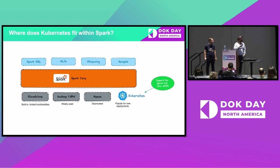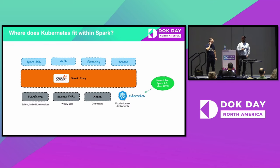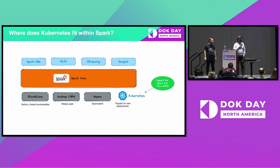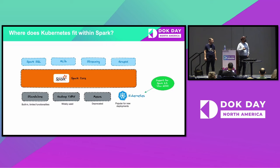Let's get started on Spark on Kubernetes. Apache Spark is a distributed processing framework mainly used for processing terabytes and even petabytes of data at very large scale with both unstructured and structured data. Apache Spark comes with a set of libraries such as Spark SQL, MLlib, streaming, and GraphX — mainly for data processing, machine learning, real-time data processing, and graph data processing.